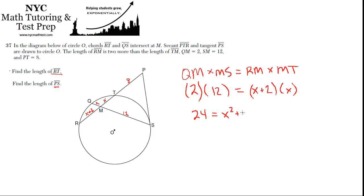So 24 equals—we have to distribute over here, right? So X squared plus 2X. And now I'll subtract 24 from both sides. So X squared plus 2X minus 24. And can we factor that? Yes, we can. It would be X plus 6 times X minus 4.